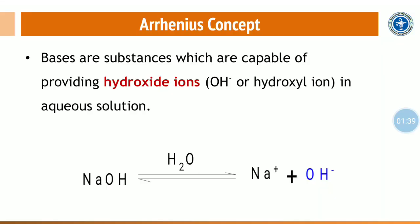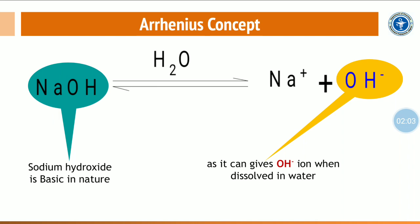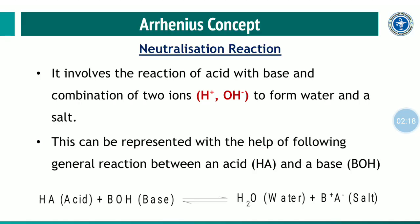According to the Arrhenius concept, bases are substances which are capable of providing hydroxide ions (OH⁻), also called hydroxyl ions, in aqueous solution. For example, sodium hydroxide (NaOH) in aqueous solution ionizes into Na⁺ and OH⁻ ions, producing OH⁻ ions when dissolved in water — that's why it is considered a base according to the Arrhenius concept.